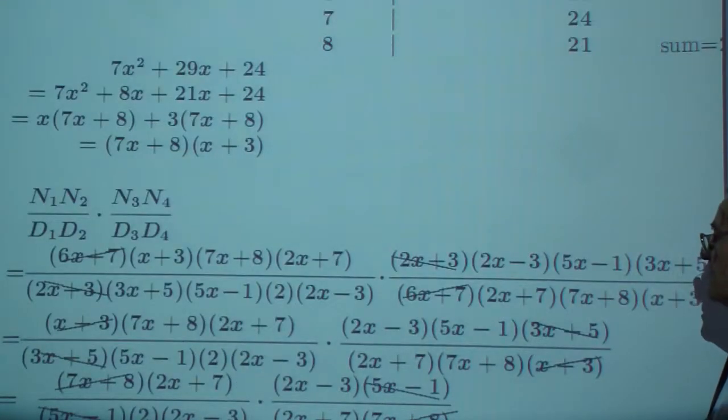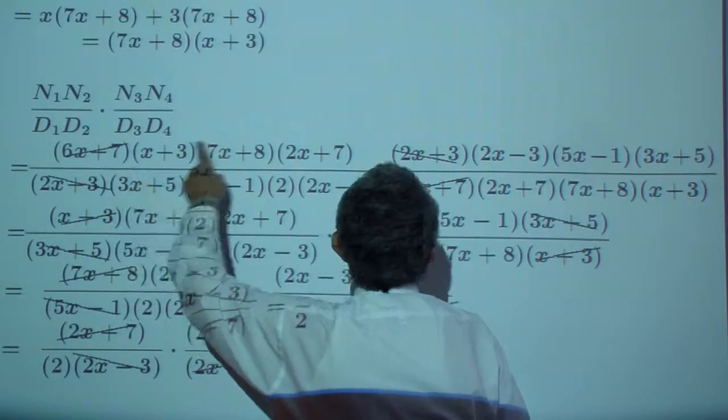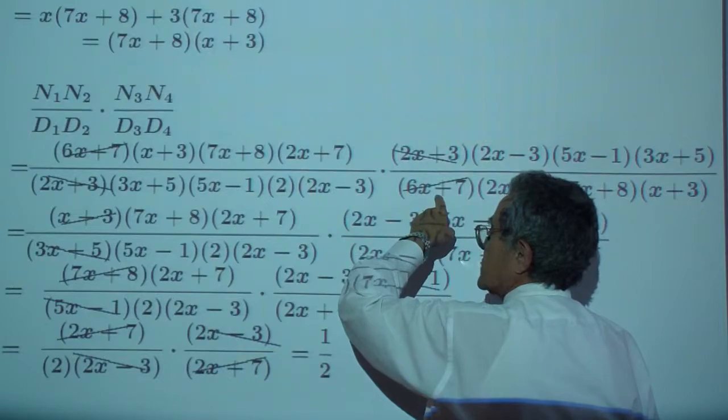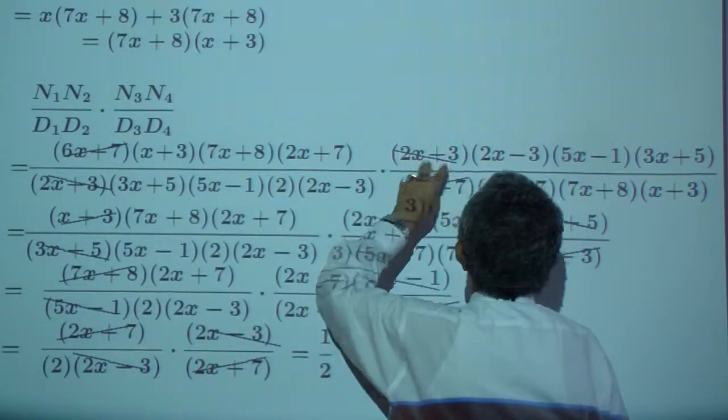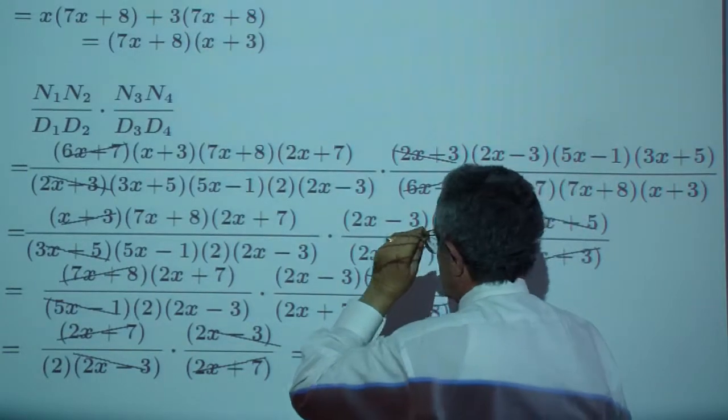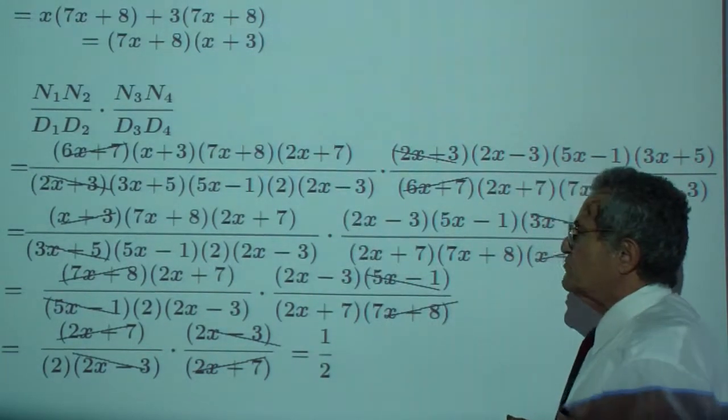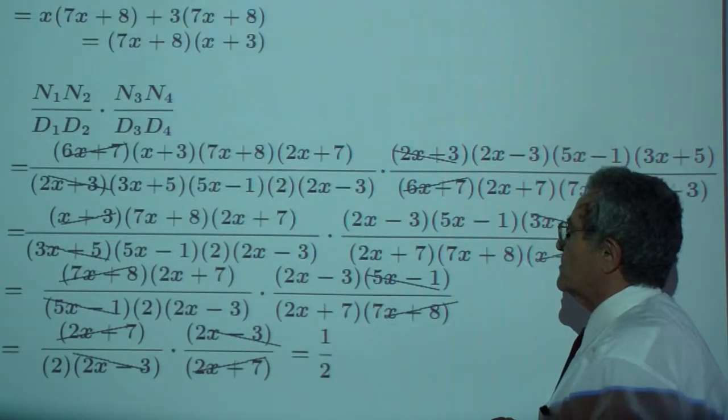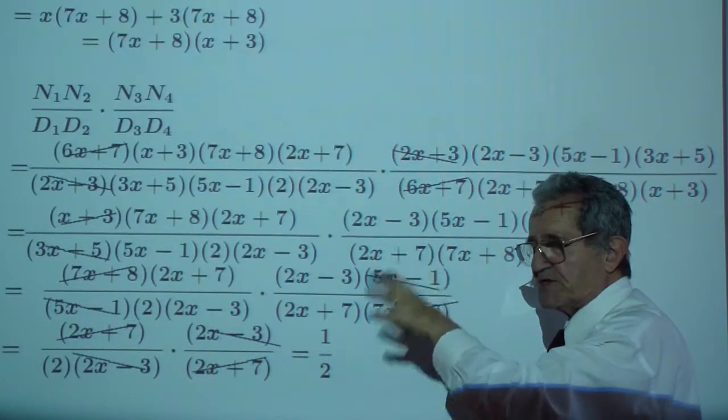Now let's put it all together. The 6x plus 7 and 6x plus 7 drop out. 2x plus 3 over 2x plus 3 is 1. So we are left with the following. I don't have too much capability of reducing this, so I do it one step at a time, so it's less confusing.